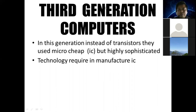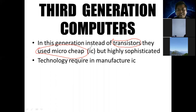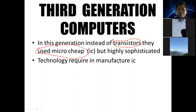In the third generation, the transistor was replaced by the microchip, also called IC — Integrated Circuit. The IC increased the processing speed significantly. The disadvantage was that sophisticated technology was required to manufacture the IC.